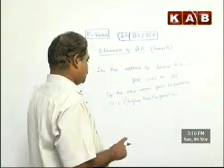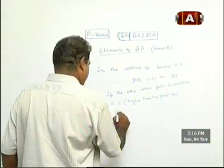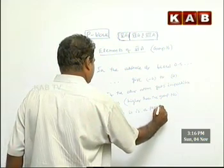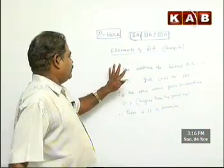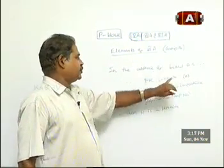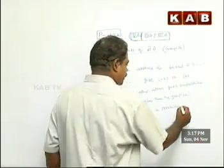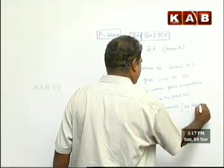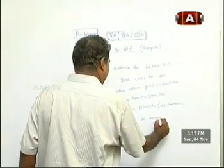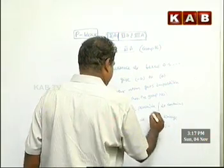An atom gets an impossible oxidation state higher than the group number, then it is a peroxide. In the absence of fixed oxidation elements, give minus 2 to oxygen. If the other atom gets an impossible oxidation state, then it is a peroxide — it contains a peroxy linkage. A peroxy linkage is an oxygen-oxygen single bond.